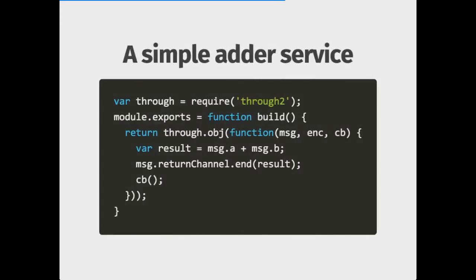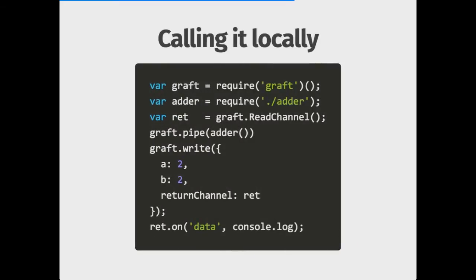How does this work? Let's build a simple adder service. This service is a transform — it gets a message with A and B in, and we send the sum back on the return channel, then close the thing. We can call this stuff locally — it's really easy. You create a new Graft instance, pipe it to the other service you require, send your message with A, B, and the return channel, then print the result.